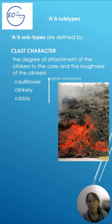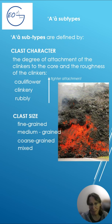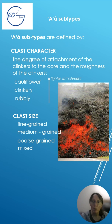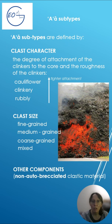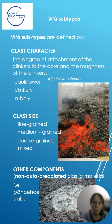We can identify cauliflower, clinkery, and rubbly structure. Based on clast size, we can identify fine, medium, and coarse-grained material or mixed material. Aa lava can also be differentiated based on the presence of other components — non-autobreciated clastic material, for example, Pahoehoe slabs.